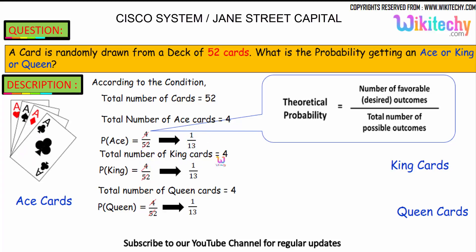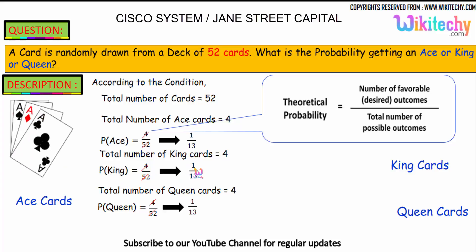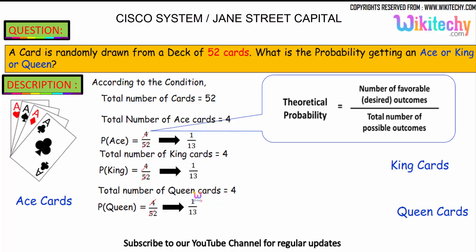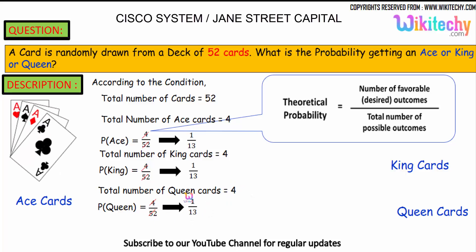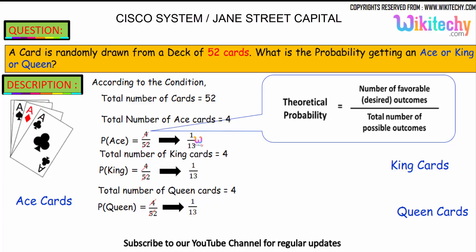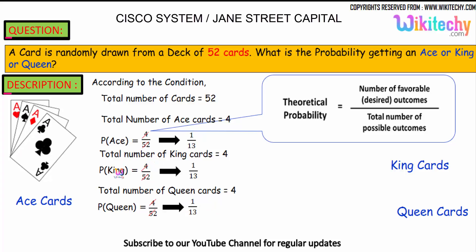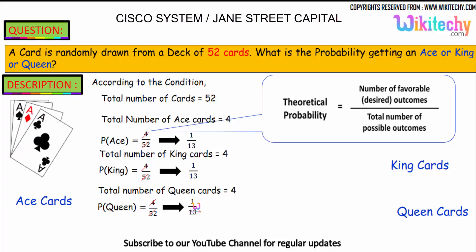The total number of king cards is 4, so 4 divided by 52 — probability of king is 1/13. The queen card is also 4, so the probability of a queen is 4 divided by 52, which is 1/13. The probability of ace is 1/13, the probability of a king is 1/13, and the probability of a queen is 1/13.